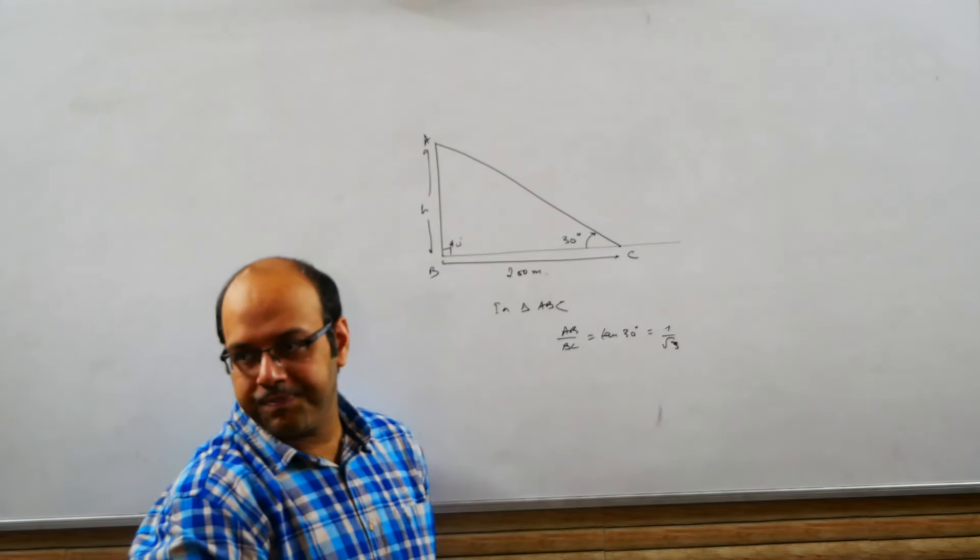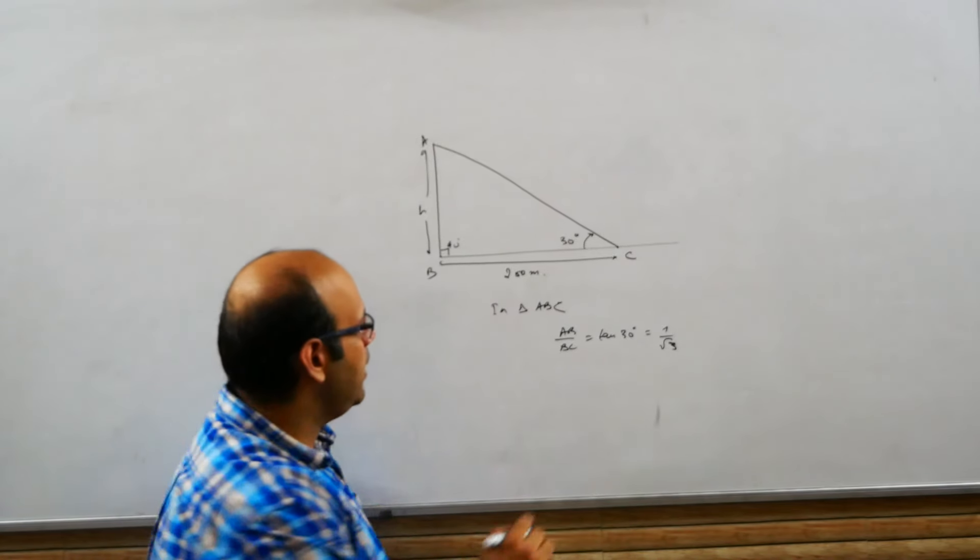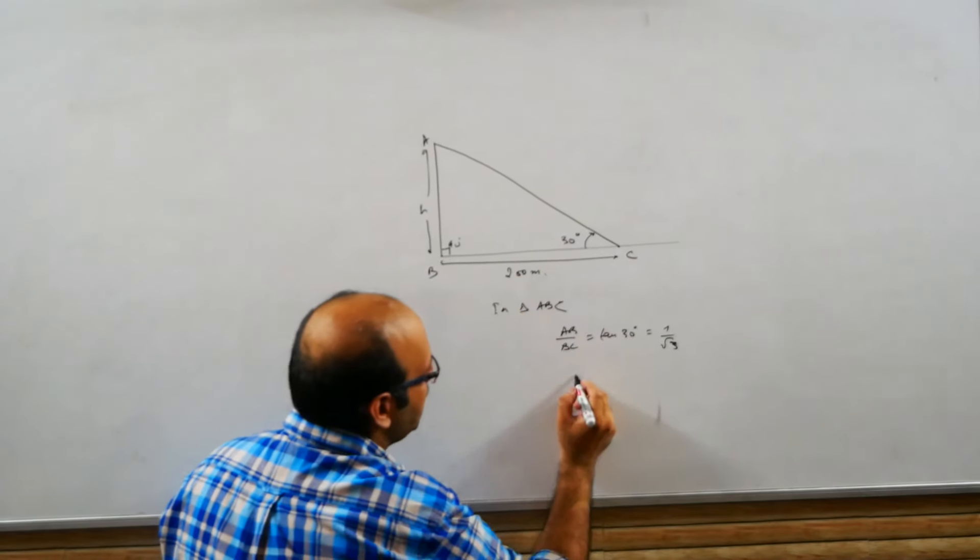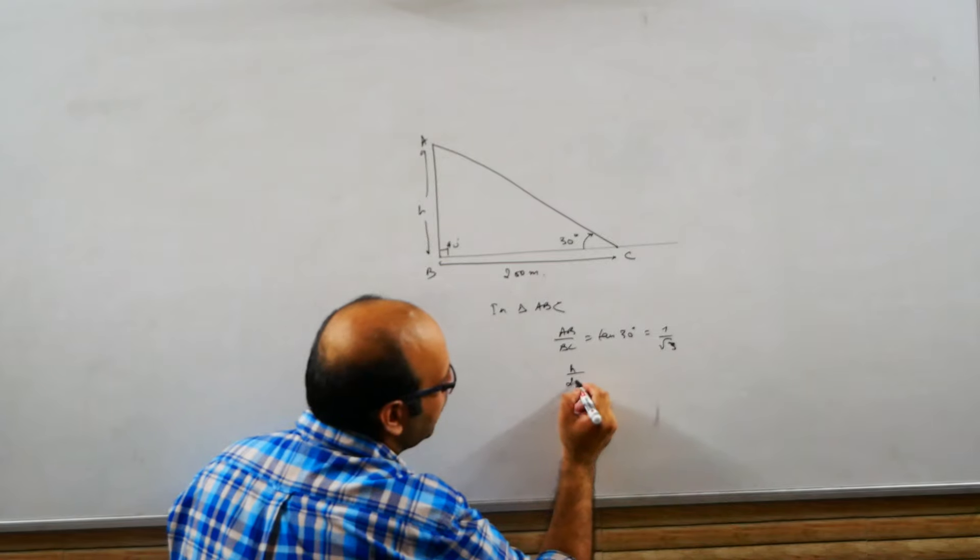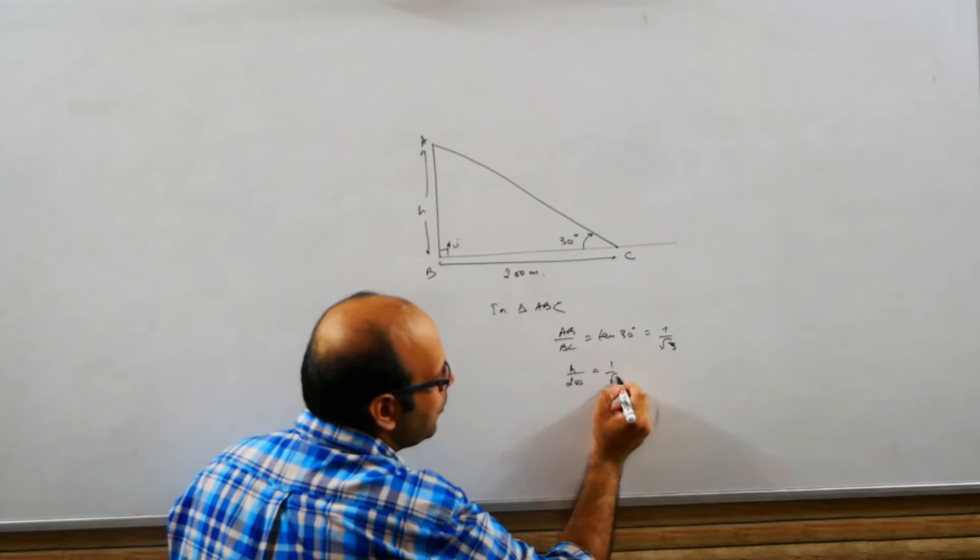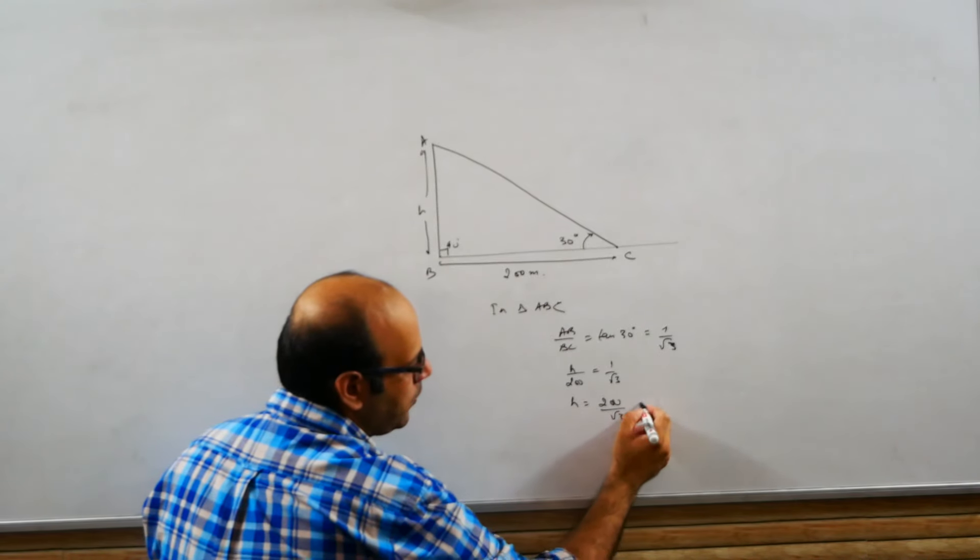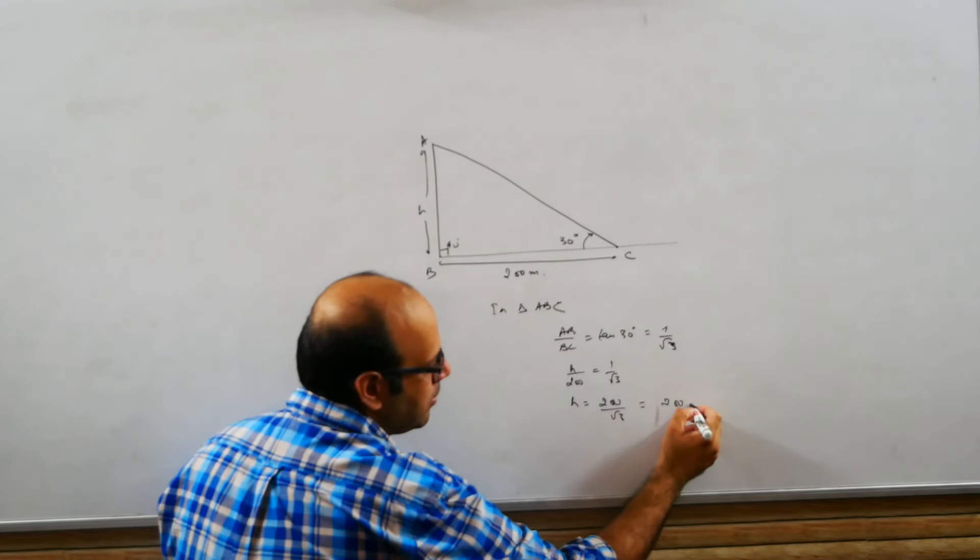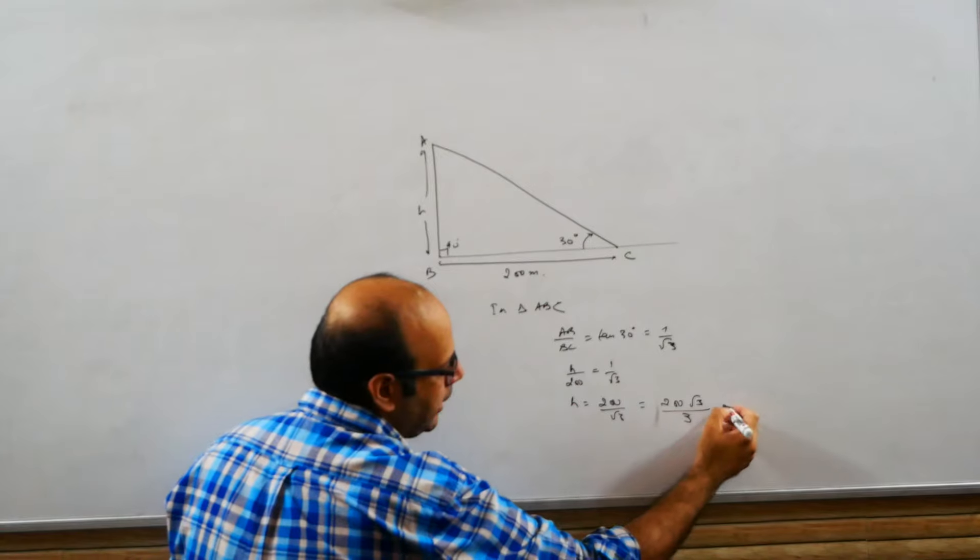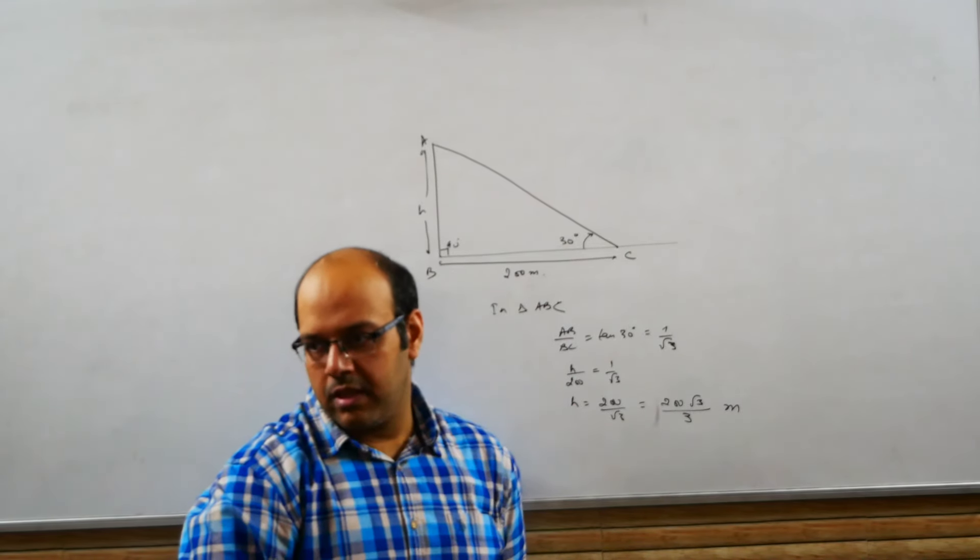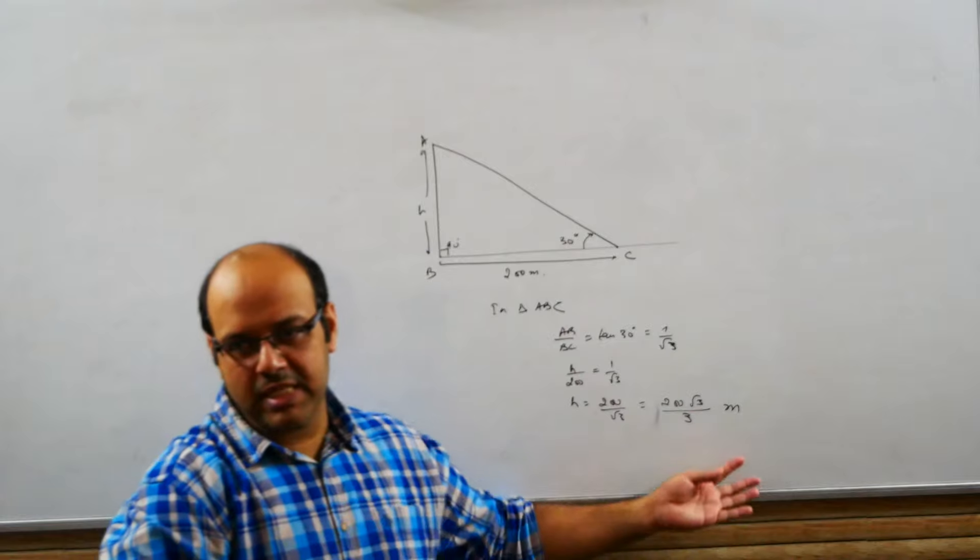1 by root 3. Right? So, AB, when we call this H, BC is given as 200 meters, this is 1 upon root 3, so H will come out to be 200 upon root 3 which is 200 root 3 upon 3 meters. You got your answer.